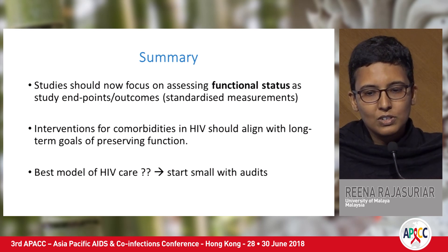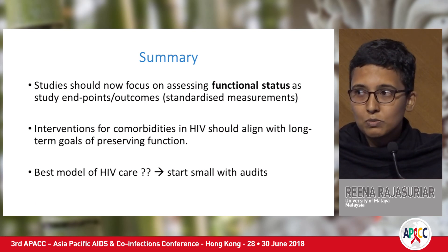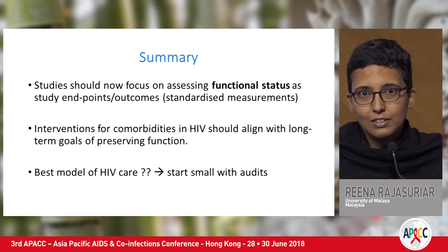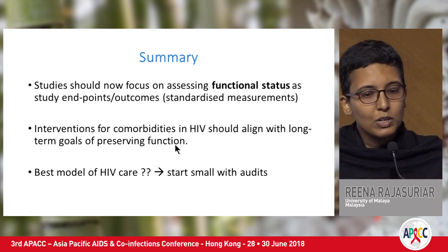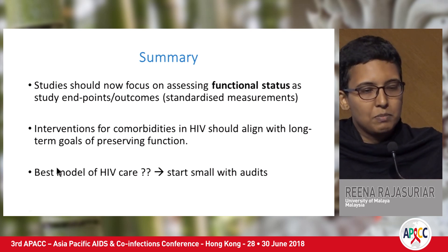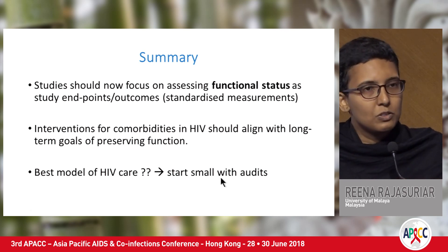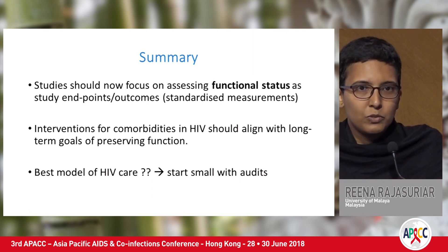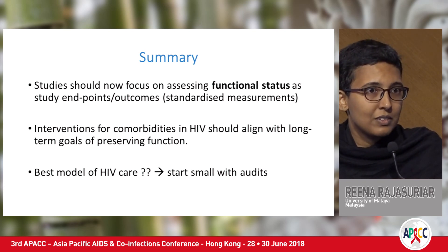In summary: studies should now focus on assessing functional status as study endpoints, and ideally these measurements should be standardized across studies so they're comparable. Interventions for comorbidities in HIV should align with the long-term goal of preserving function. While we're still unsure of the best model of care for aging patients, there are small things we can do — like audits — to make sure patients don't fall through the gaps and long-term complications are addressed.